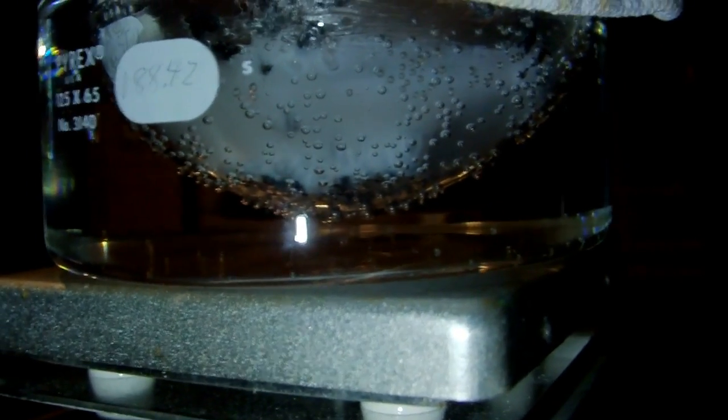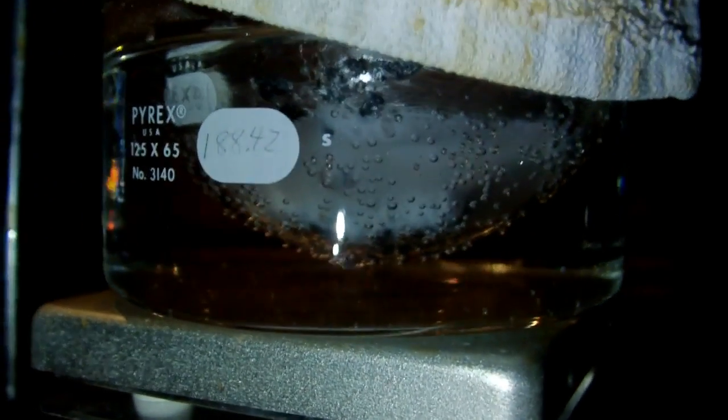So the temperature in the still head has risen to about 45 degrees and the boiling has slowed significantly. You can see down here that it's barely doing anything. So I think now's a good time to stop the distillation. So I'm just going to turn the heat off and unwrap everything and let it cool down.